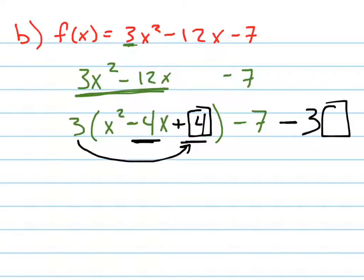So if I'm putting a positive 4 there, I'm really adding 12, right? Because 3 times 4 is 12. So I also have to put the 4 here because now I'm subtracting that same thing.